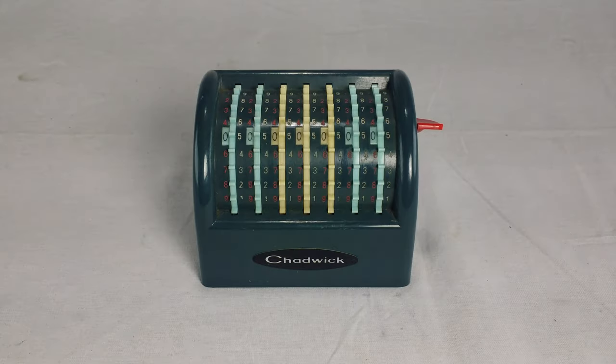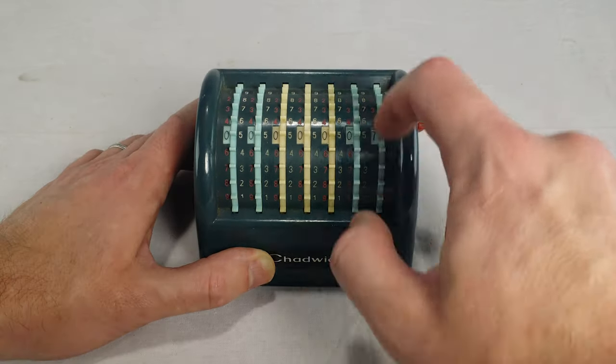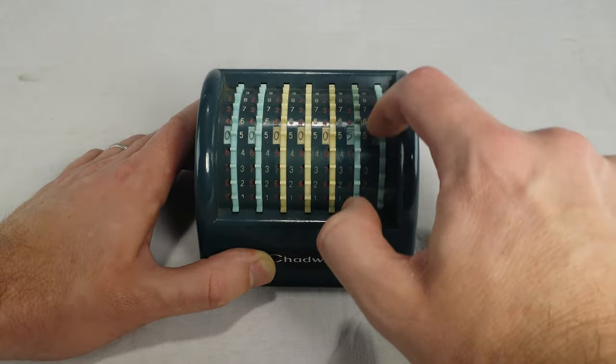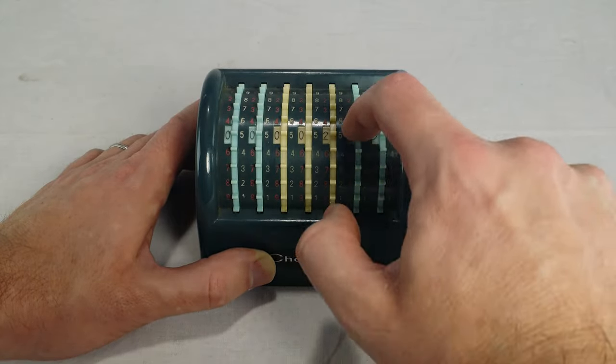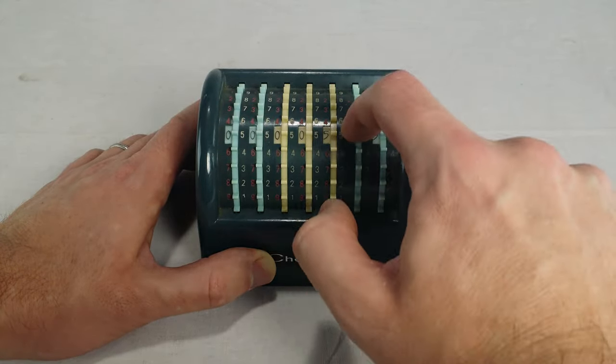This Chadwick adding machine. Another multiplication by repeated adding. This one looks simple, but it took me forever to get it right. It's way too easy to accidentally bump the wheels and mess up the answer.